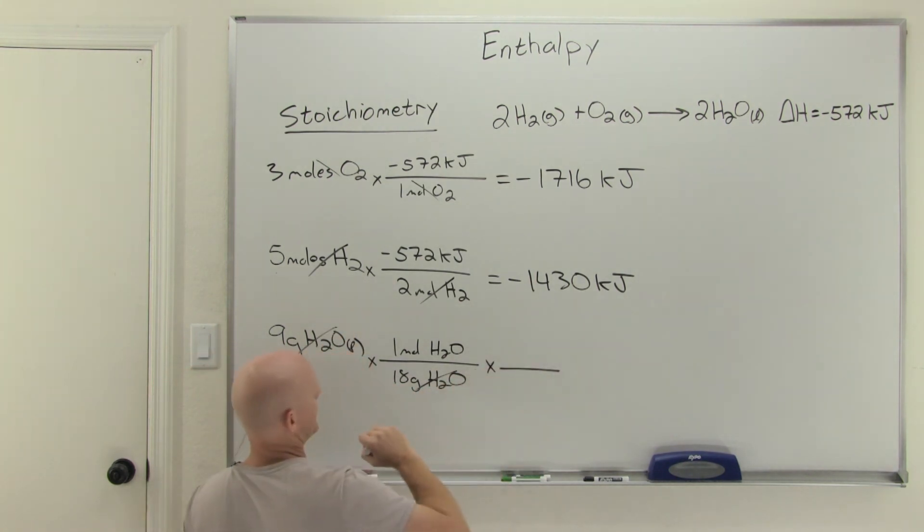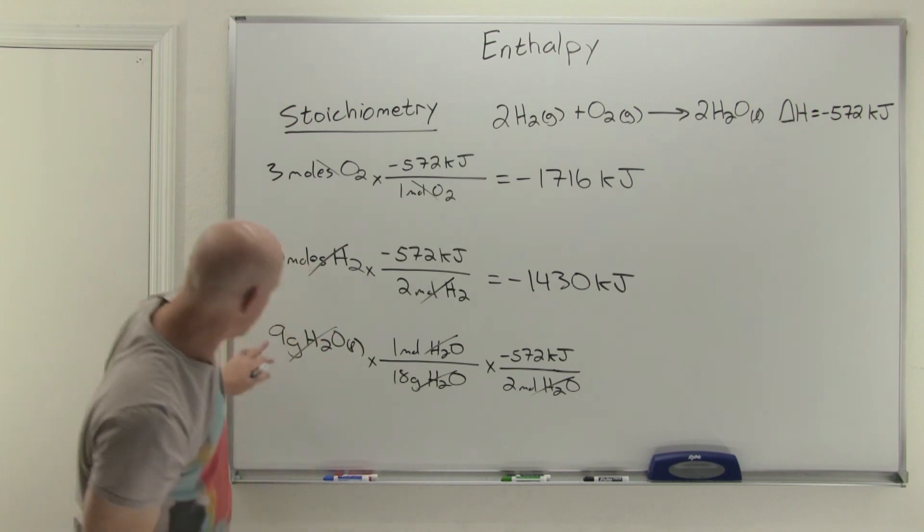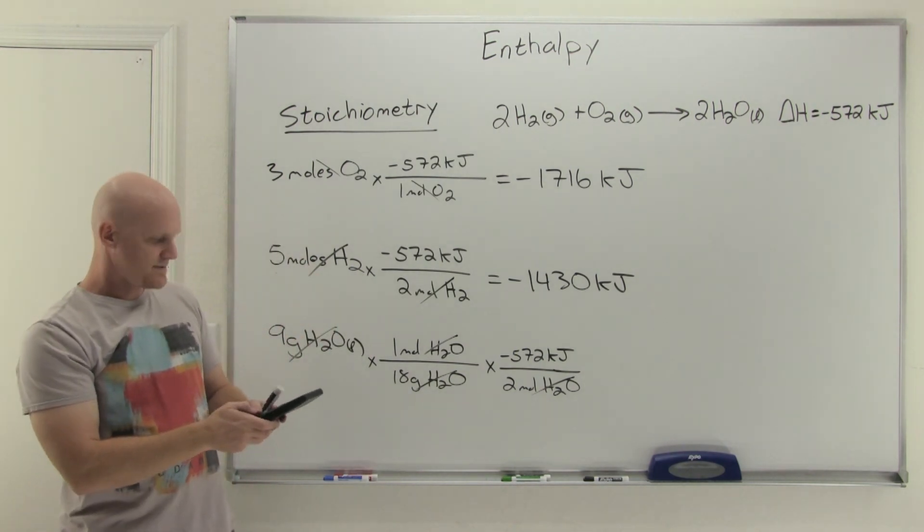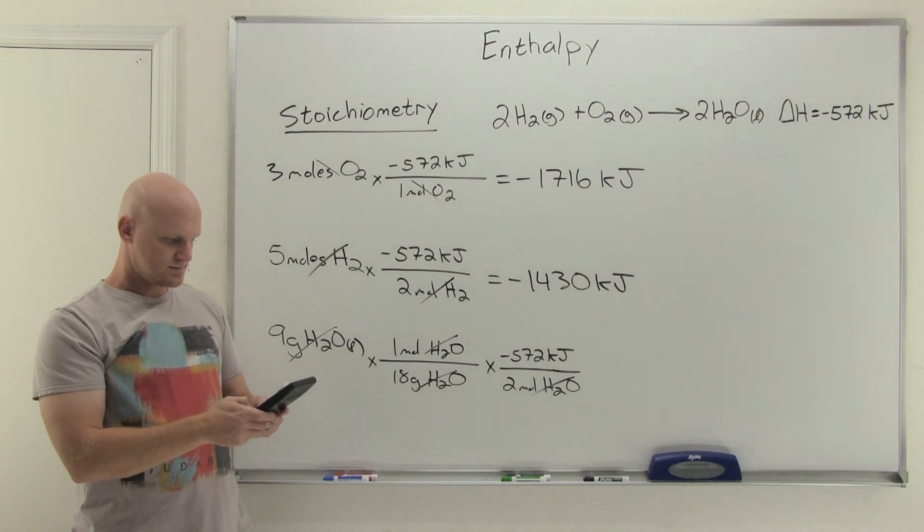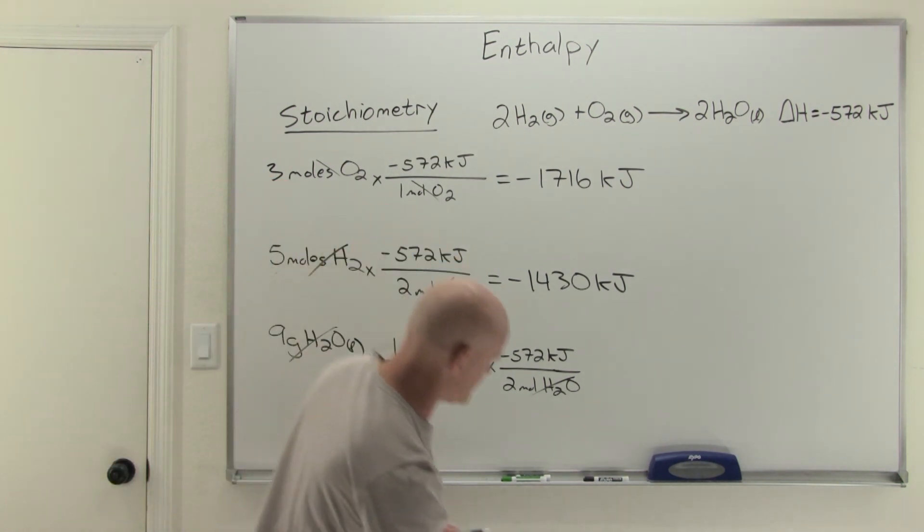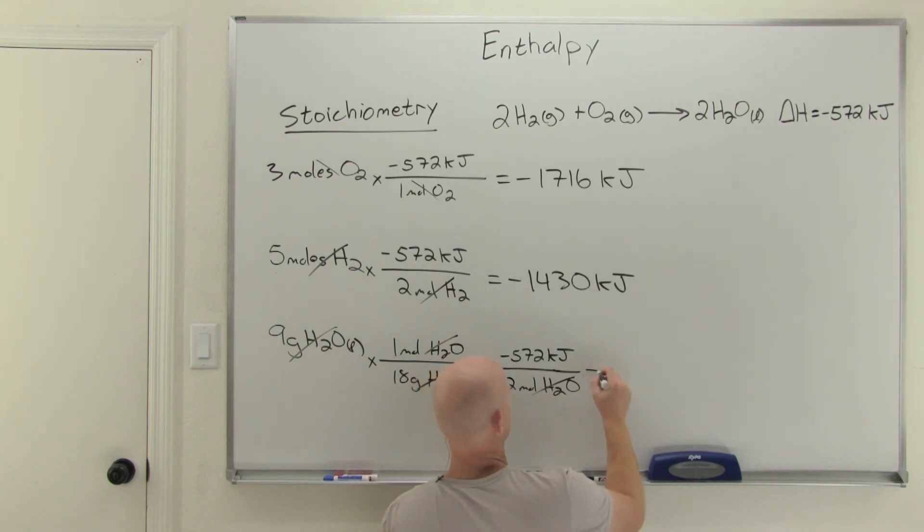That'll be moles of water now. In this case, we take our negative 572 kilojoules is for two moles of water being produced. And voila. Nine divided by 18 is a half. And a half of negative 572 is 286. So in this case, negative 286 kilojoules.